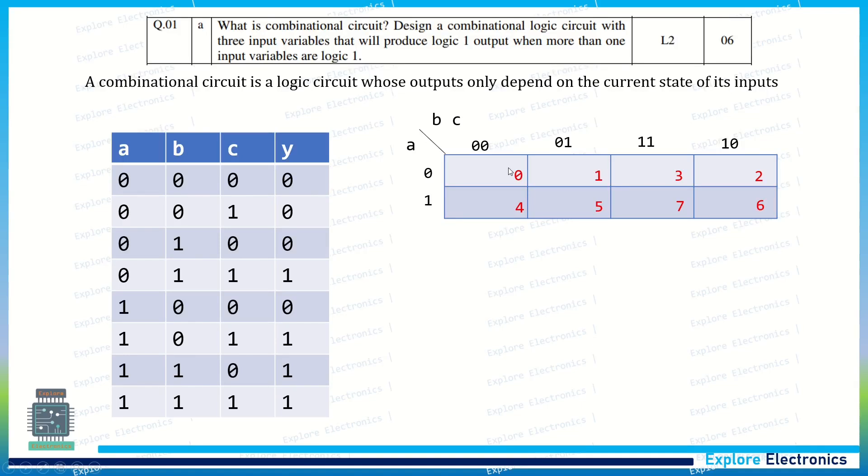Now, with respect to these cell values, we need to put the values present in my truth table output. So first, let me put ones over here. One is there here. 011 is one. 011 means A is 0, 11 is BC, that is the third position. 011 means it is 3, that is 1. Similarly, 5, 6, 7 are ones.